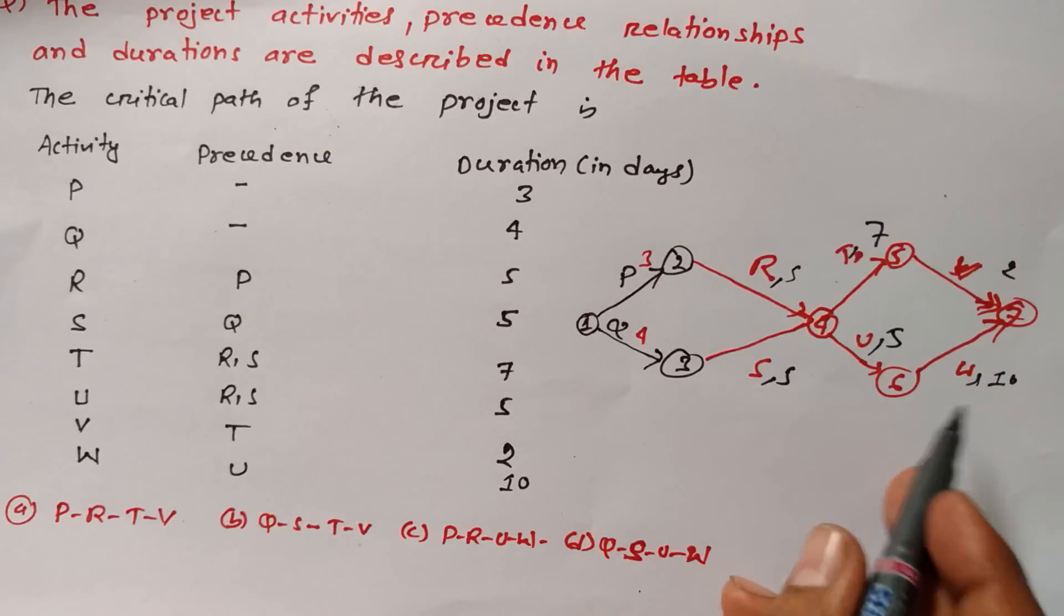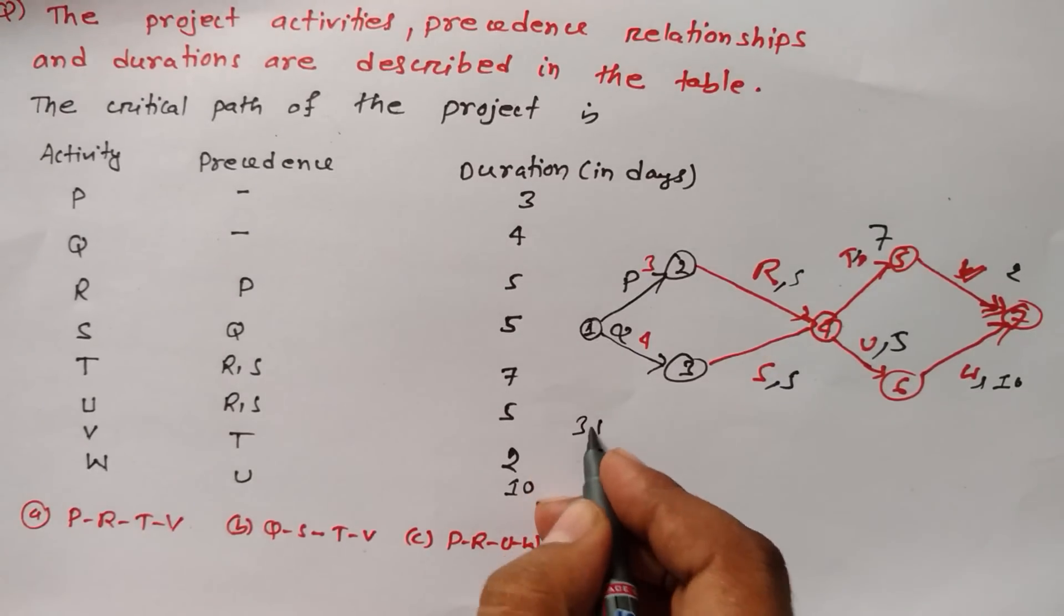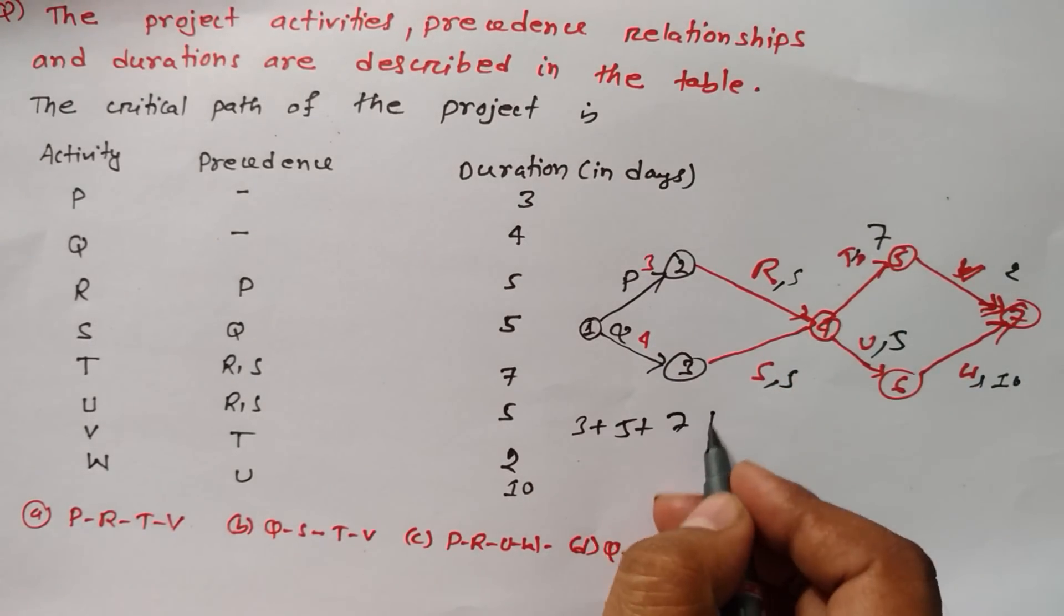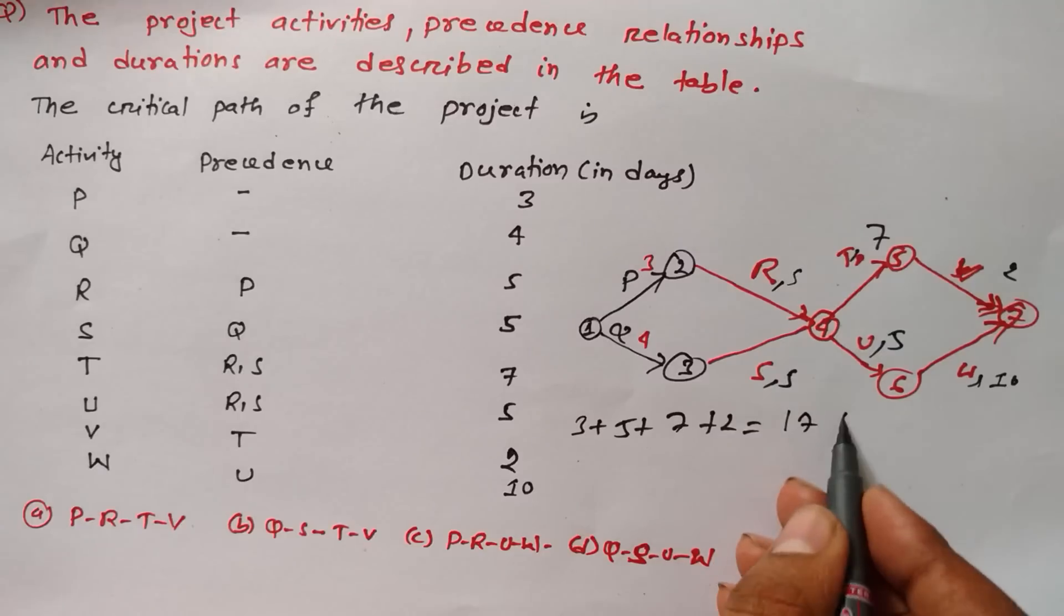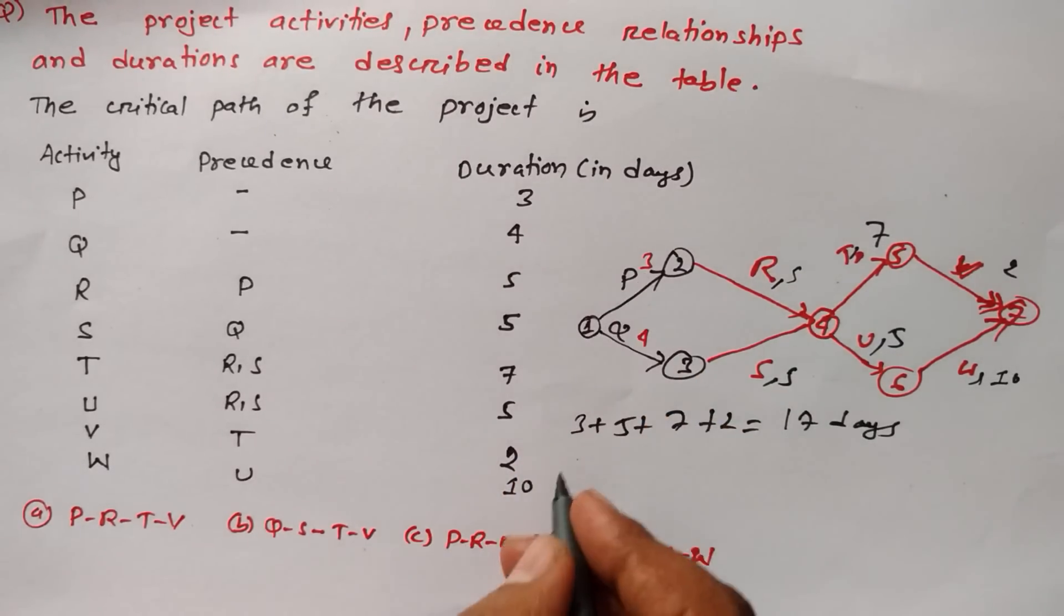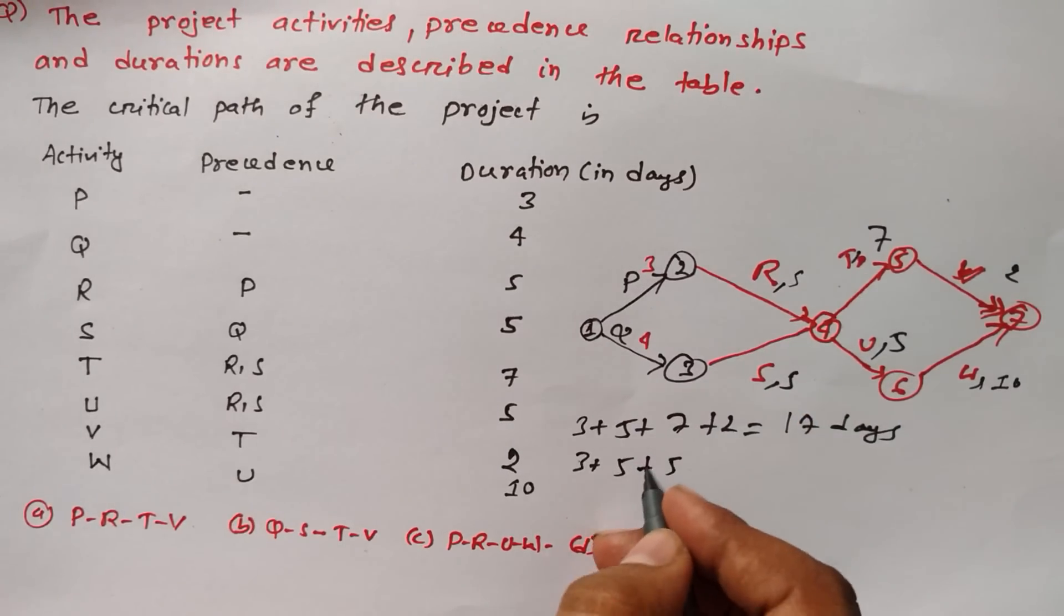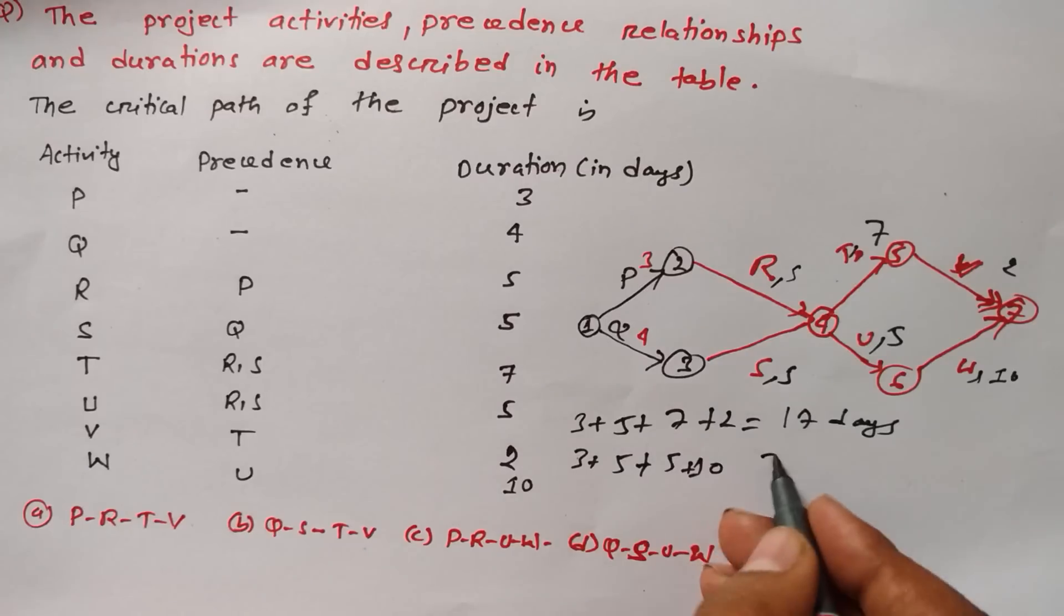So P is 3, R is 5, T is 7 plus 2, one path is here - 5, 8, 15, 17 days. Another path is here: P 3, R 5, U 5 and W 10, so 15, 20, 23 days.